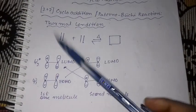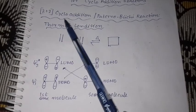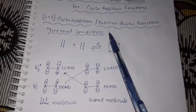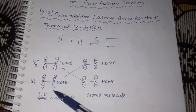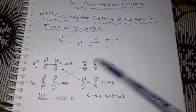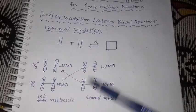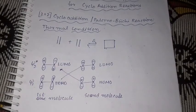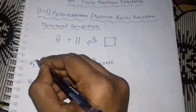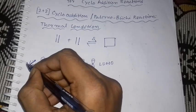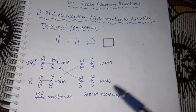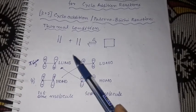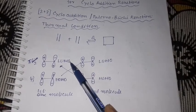For the 2+2 cycloaddition reaction under thermal conditions, we consider the molecular orbitals of the two reactants: psi 1 (pi) and psi 2 star (pi star). The pi orbital is the HOMO — highest occupied molecular orbital — and pi star is the LUMO — lowest unoccupied molecular orbital.